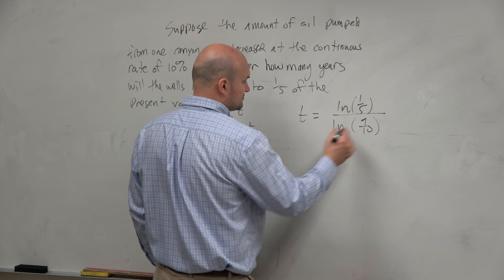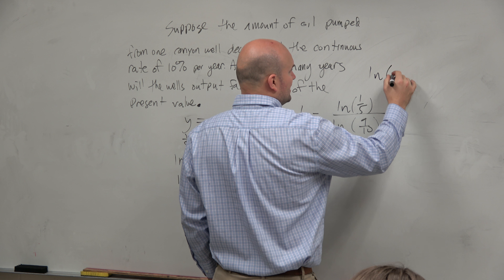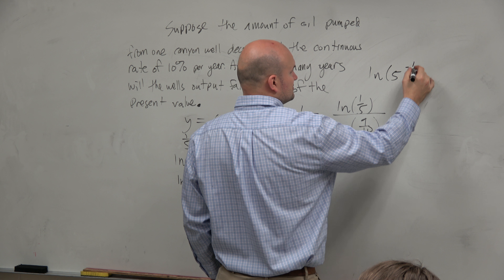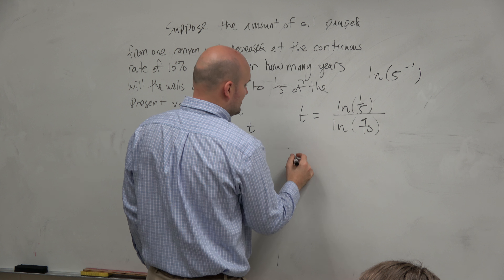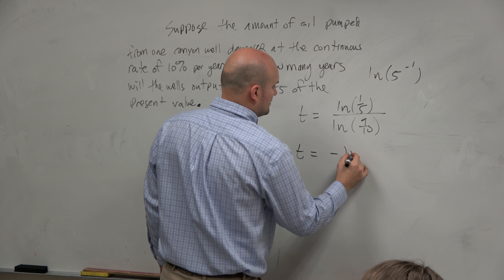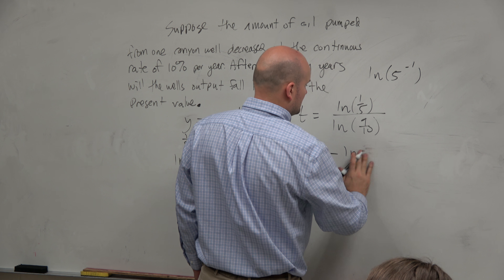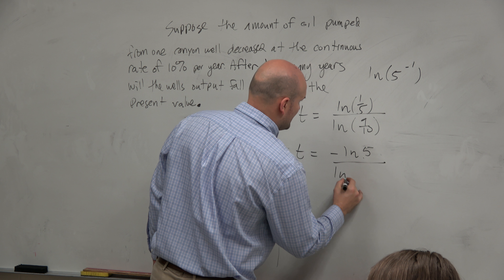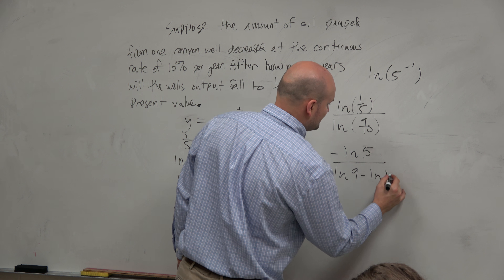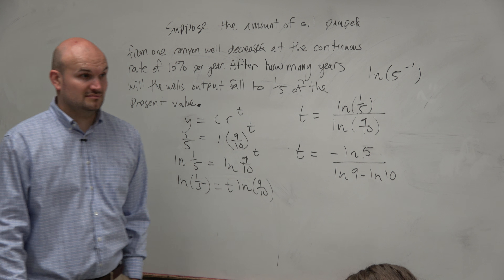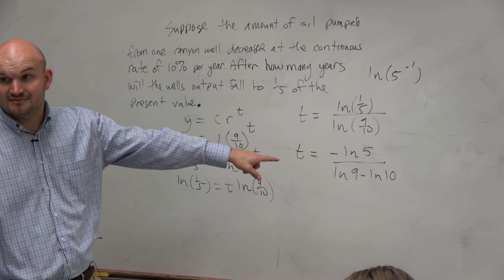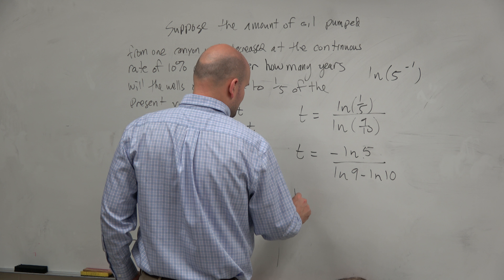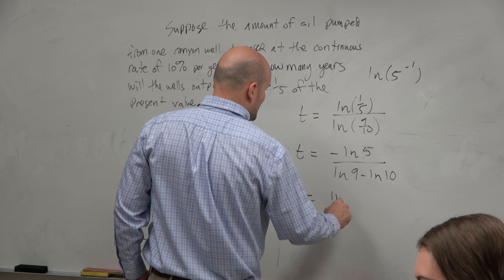And t is what we're trying to find. Let's talk about initial and present value — we just need something that's going to be 1/5. Let's use easy numbers: if we make the initial value 1, then 1/5 of 1 is just 1/5. So the equation becomes 1/5 equals 9/10 raised to the t.